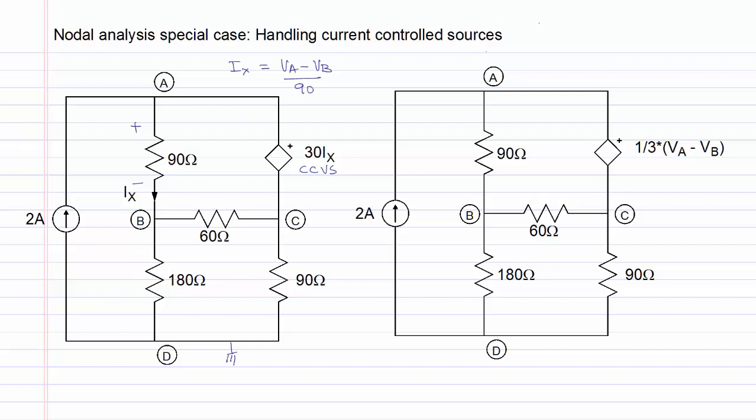Substituting the value of IX in the control source value, we have 30 IX is equal to 30 multiplied by 1 over 90 into VA minus VB, which is equal to 1 third into VA minus VB.